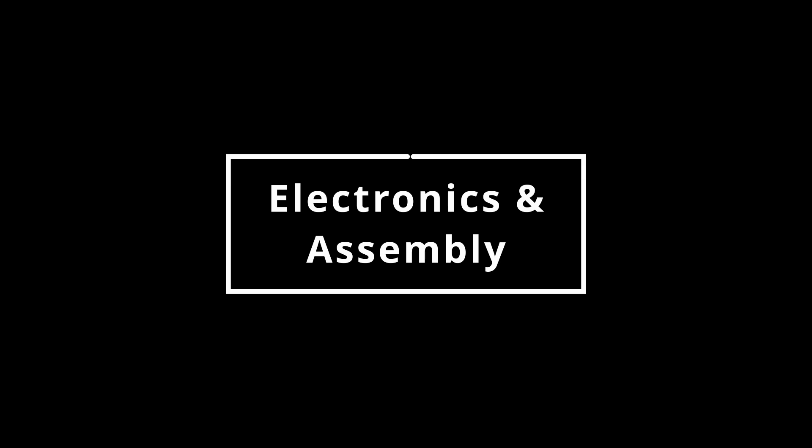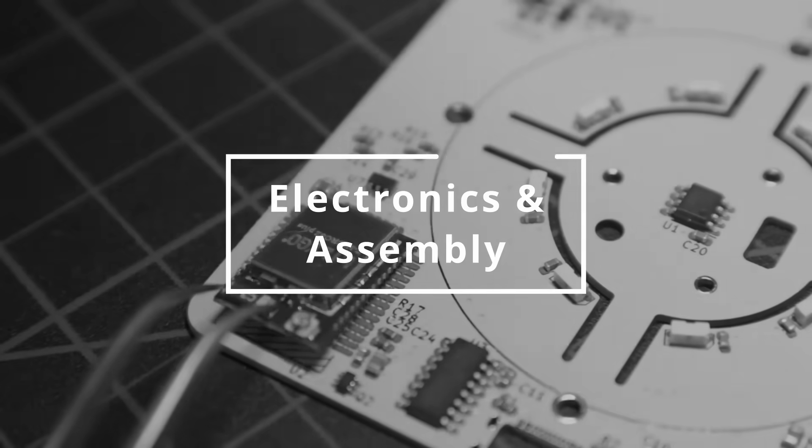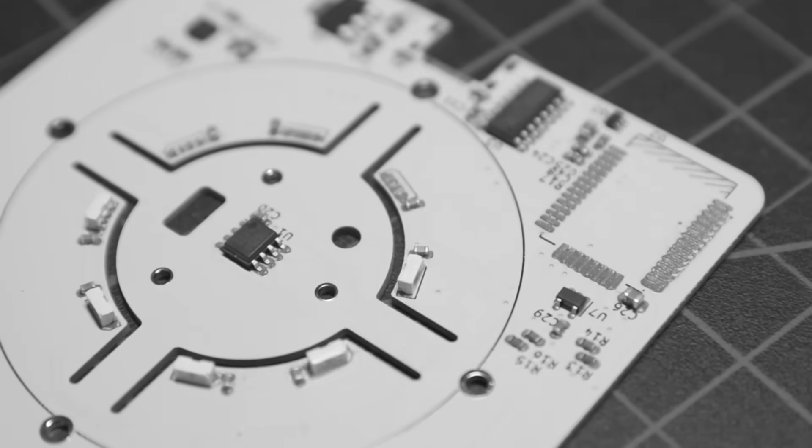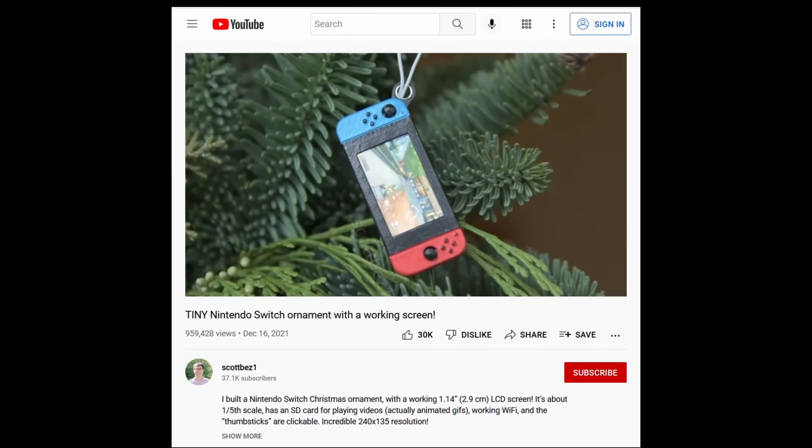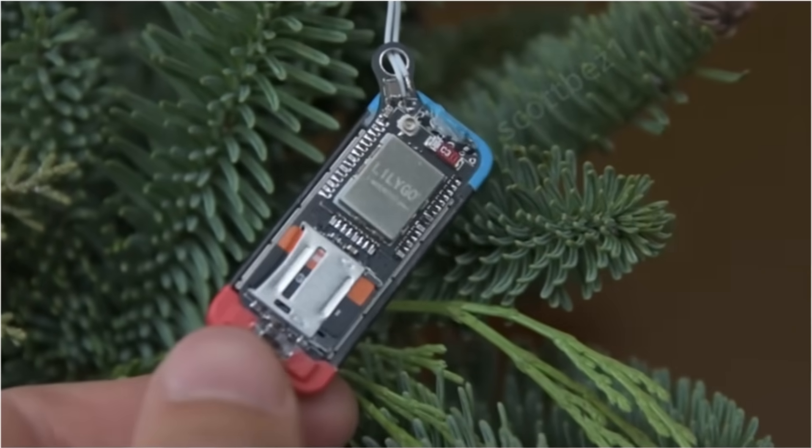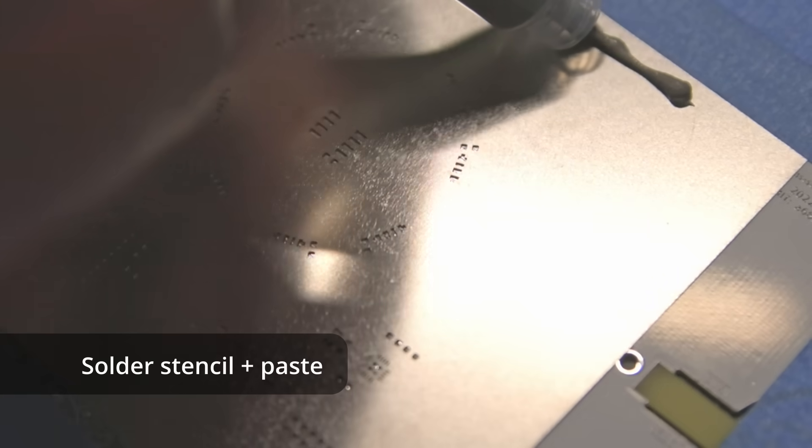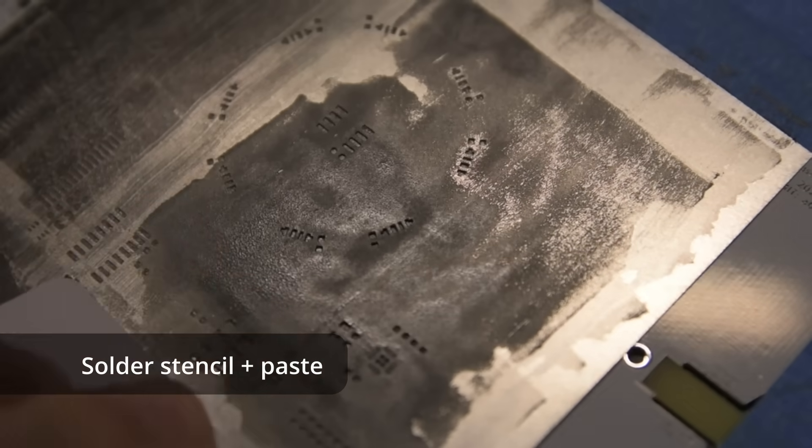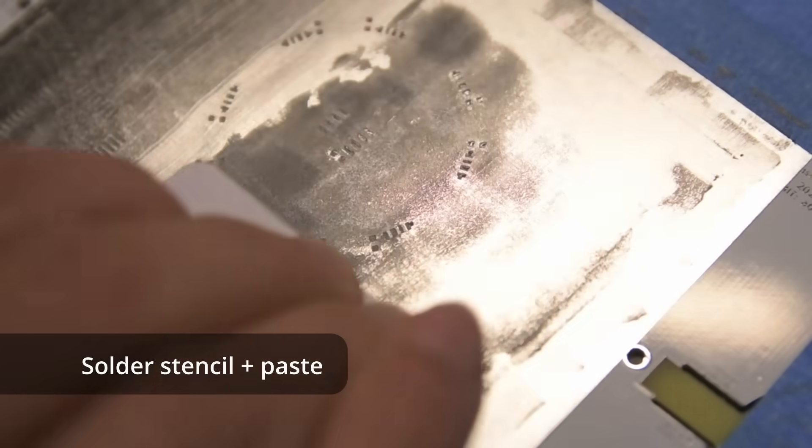Speaking of PCB manufacturing, let's actually go back in time so I can show you a little more about how the main PCB is built. Similar to previous projects like my tiny Nintendo Switch ornament, I'm going to be hand-assembling this PCB and reflow soldering it. The process starts by taking a solder stencil, which I ordered along with the bare PCBs, and squeezing some solder paste through all of the holes and onto the PCB's exposed pads.